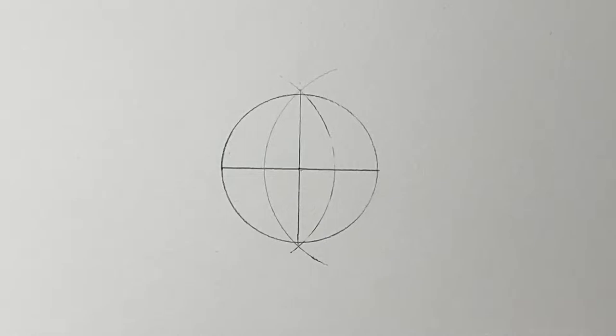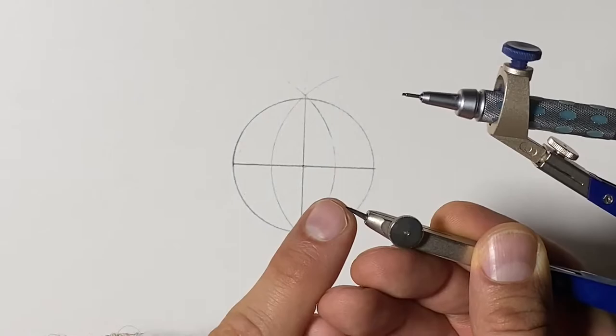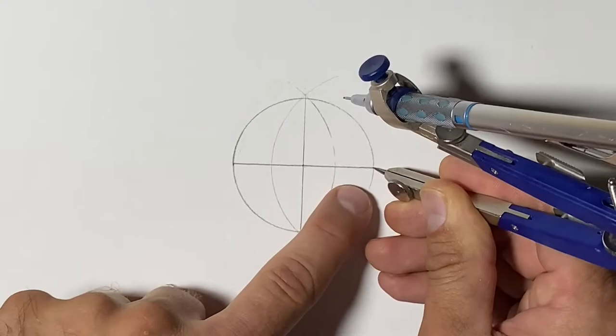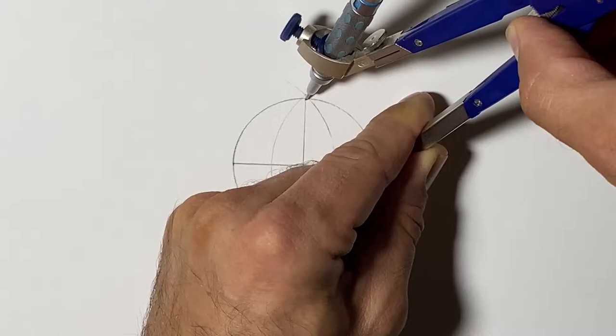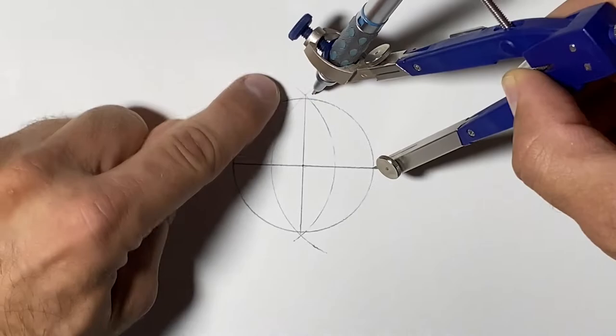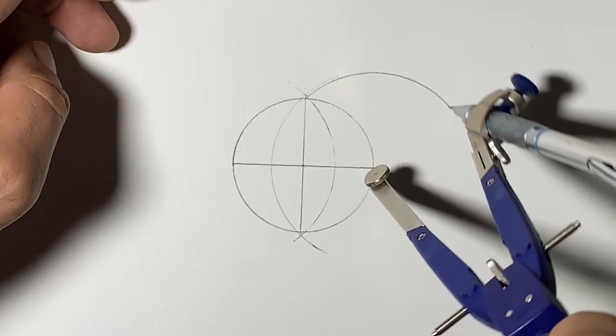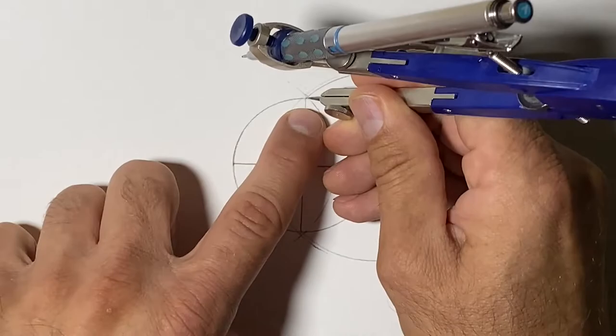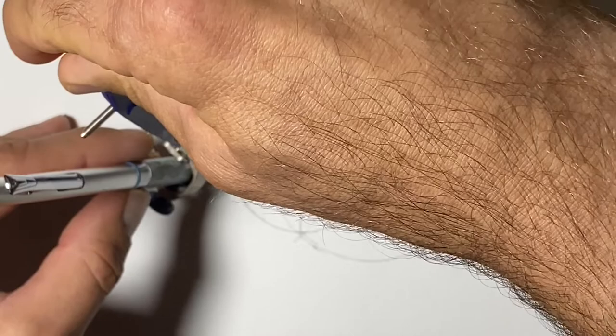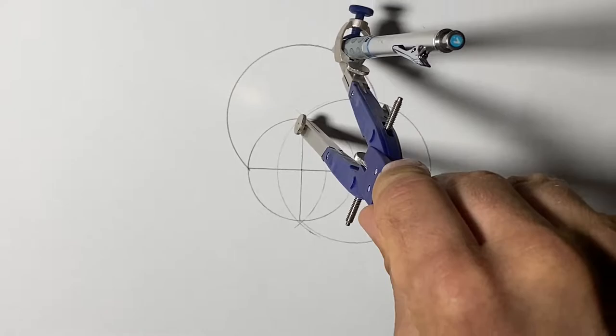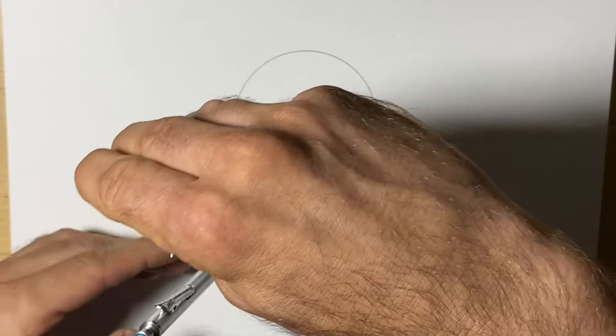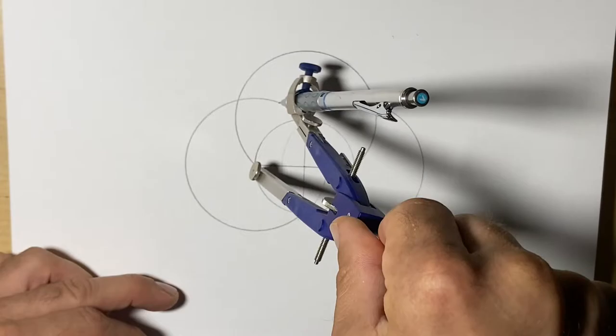So the second step will be to take our compass, and we are going to place the point of the compass on one of the intersecting points where the line and the circle meet. And we're going to adjust the compass so that it's touching the one on the top and the bottom with our pencil. And that's the distance to the next curve. So we'll make this curve here. And then we'll go to that spot up here, and do the same. Then we'll go to this spot here, and we'll repeat that so there are four new arcs or parts of a circle.